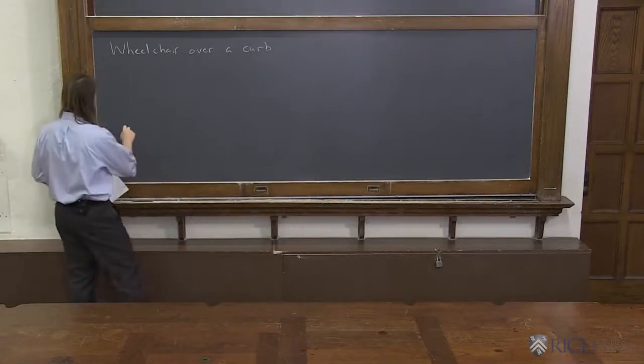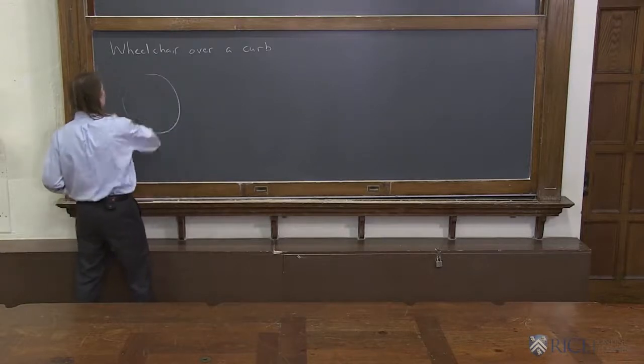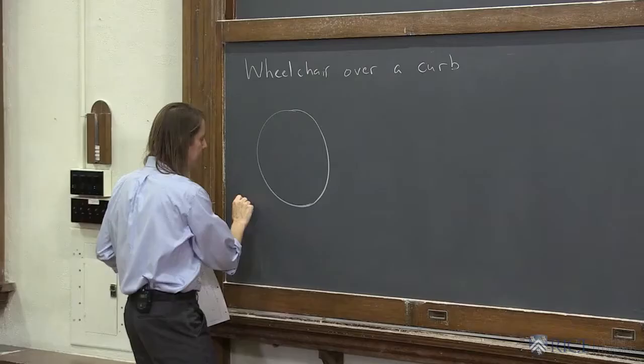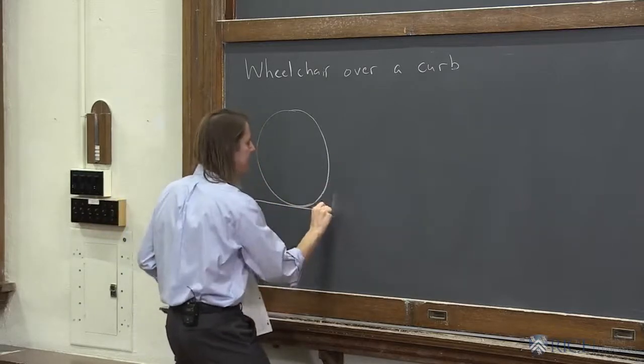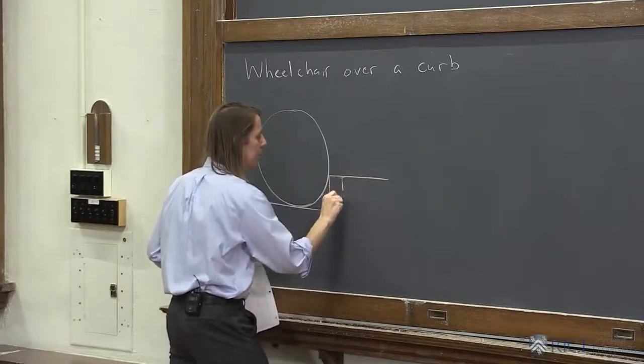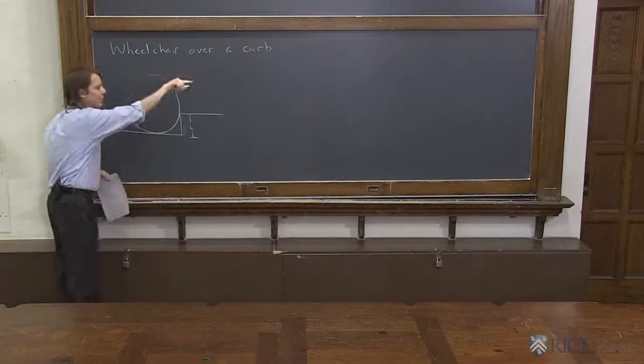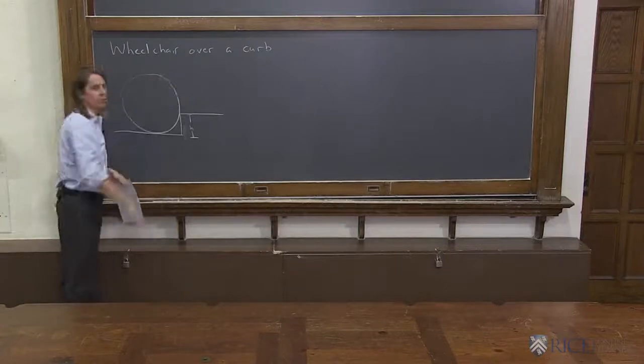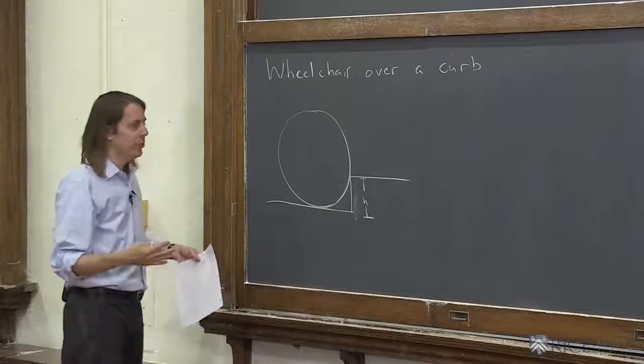It's about torque. So the idea, if you know how a wheelchair works, is you've got this big wheel and you come up against a curb of height h. And you know the way you do it is you push forward on the wheel and you lift the wheelchair over the curb. So we want to calculate how much force does it take to do that.